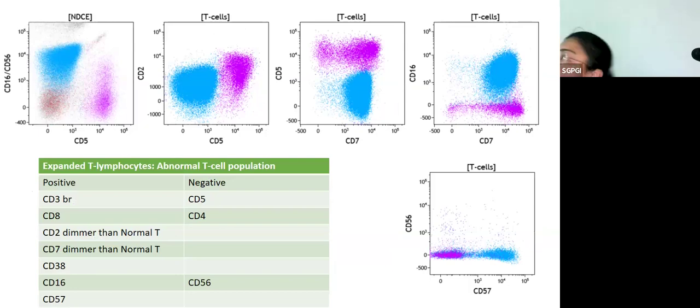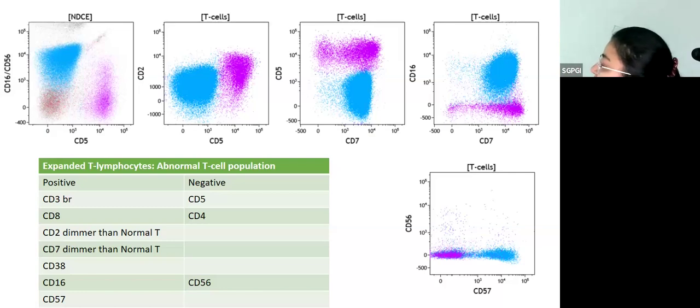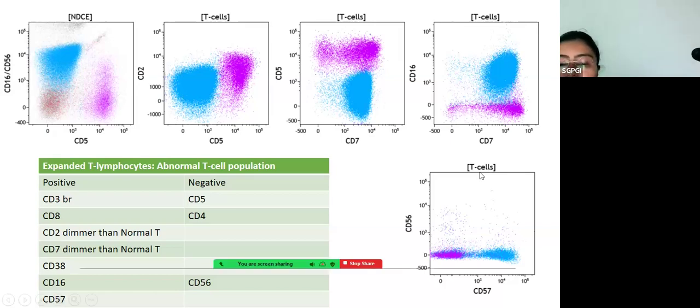LGL proliferation, cytotoxic in type and lacking CD5. If we go to further tubes, we realize that the same population is also positive for CD16 or CD56. When you look at CD2 expression, the expression of CD2 is also slightly lower. CD7 is also slightly lower than the normal T cells, and it is CD16 that is positive. We look at the CD56 and CD57 expression, and most of the blue cells actually express CD57.